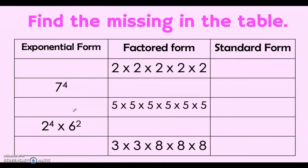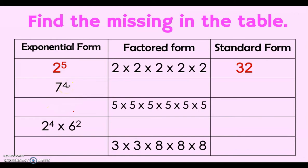Let us find the missing entries in the table. All we need to do is fill in the missing answers. For the exponential form: given the factored form, the base is 2 and the exponent is 5, so we write 2 to the power of 5. For the standard form, we multiply 2 times 2 times 2 times 2 times 2 to get 32.